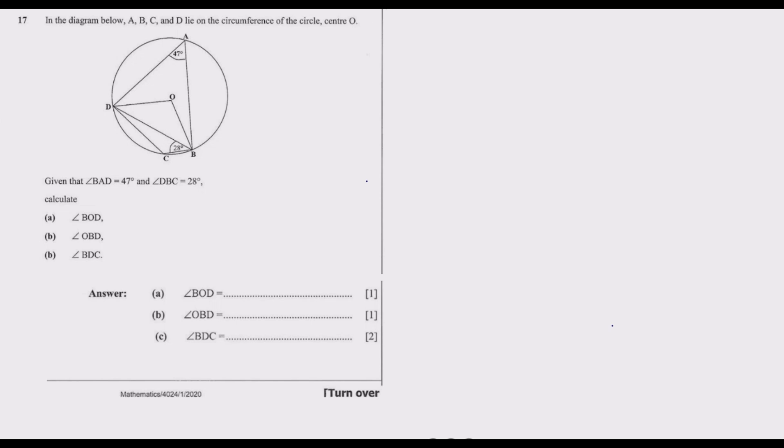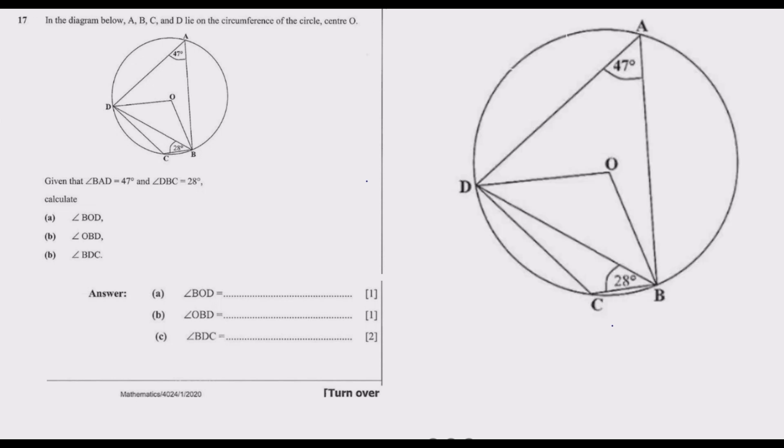Question 17 reads: In the diagram below, A, B, C, and D lie on the circumference of the circle, center O. Given that angle BAD is equal to 47 degrees and angle DBC equals 28 degrees, calculate: (a) angle BOD, (b) angle OBD, and (c) angle BDC. Let me zoom in so we're able to see clearly as we answer this question.